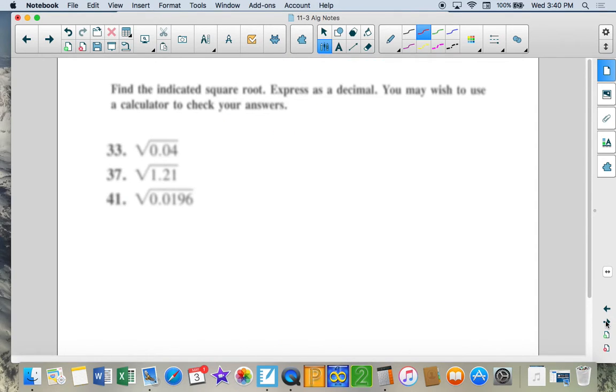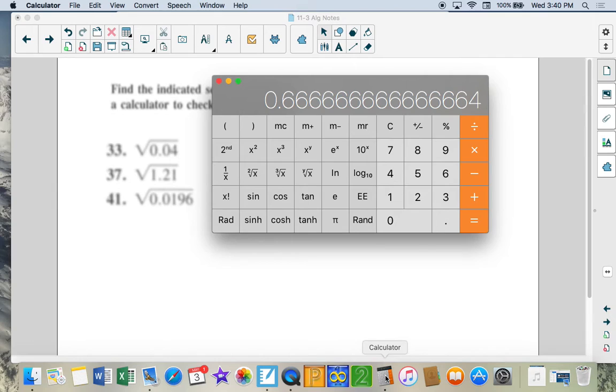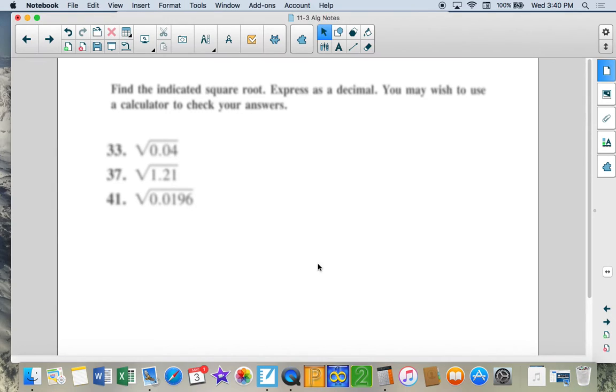Now, when we have decimals, 0.04, we take the square root, we get 0.2. And it says, expressed as a decimal, decimal, that's fine. I'm assuming we're going to get 1.1.